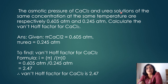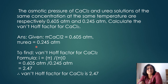Question: Osmotic pressures of calcium chloride and urea solutions of the same concentration at the same temperature are 0.605 atm and 0.245 atm respectively. Calculate the Van't Hoff factor for CaCl2. Since urea is a non-electrolyte (i=1), i for CaCl2 = π_CaCl2 / π_urea = 0.605 / 0.245 = 2.47.